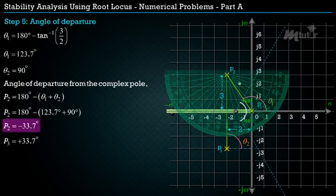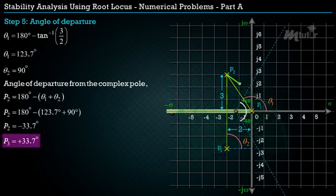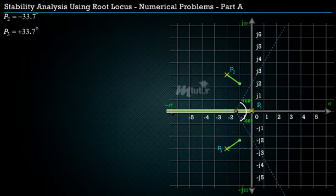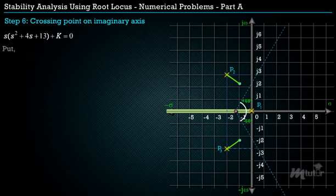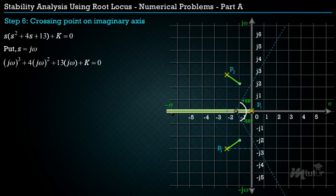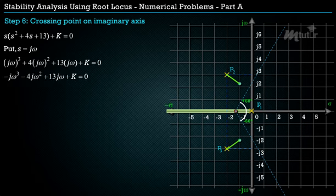Mark the angles of departure at complex poles P2 and P3 using a protractor. Next, find the crossing point on the imaginary axis. From the characteristic equation, substitute s = jω to get the characteristic equation in terms of ω, then simplify.